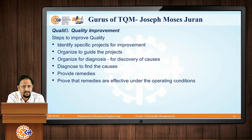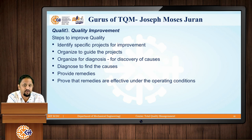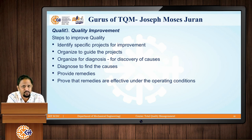The steps to improve quality are: first, identify specific projects for improvement; second, organize to guide those selected projects; third, organize for diagnosis to discover the various causes using tools like the fishbone diagram; fourth, diagnose to find the root causes; fifth, provide the remedies; and finally, prove that the remedies are effective under all operating conditions. These are the various steps needed to improve overall quality.